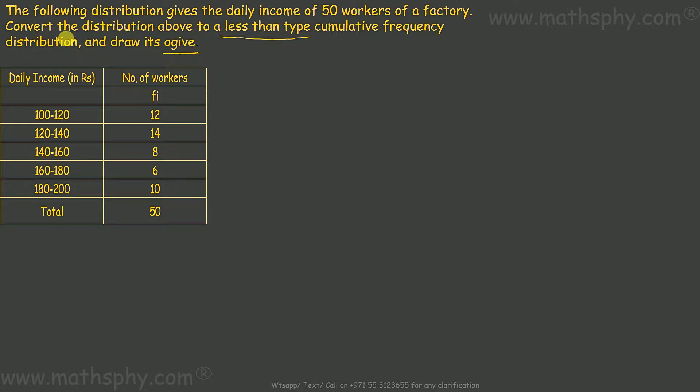It says convert a distribution above to a less than type cumulative frequency. We have this data here and that's the frequency, 50 workers. It says less than type means this way - less than type class interval.